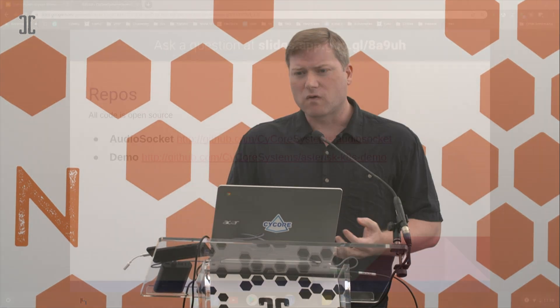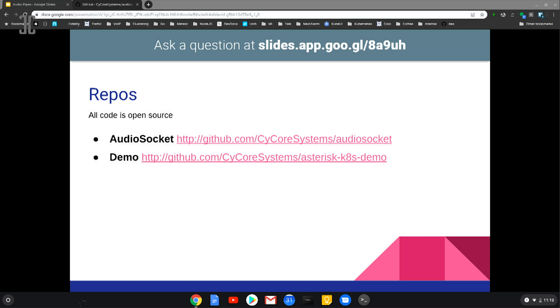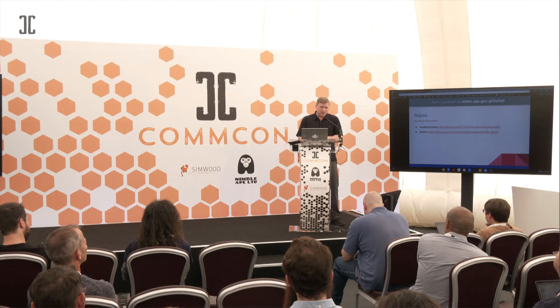Quick question: is there any benefit to AudioSocket as a dial plan application versus dialing AudioSocket using the channel? It's really just the difference between running a dial plan application and running a channel. If you're not trying to do anything that requires a separate channel, the application interface is vastly easier — no additional bridging involved, no additional ARI work. You just call the dial plan application, give it the server parameters, and Asterisk will automatically bridge it internally. Running as a channel is also possible, but it only handles one side of the circuit, so it's up to you to figure out the other side.